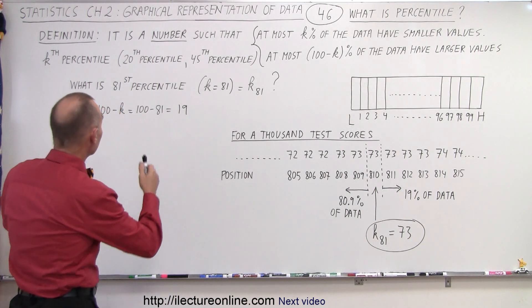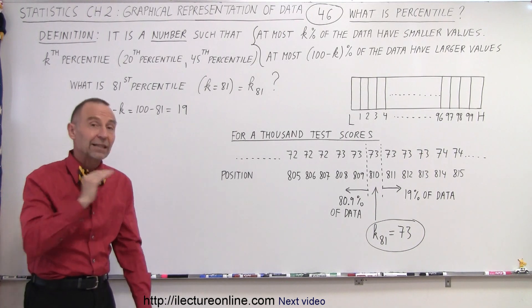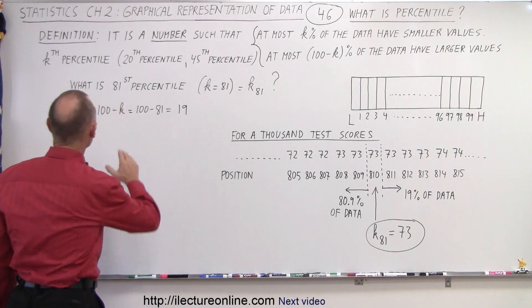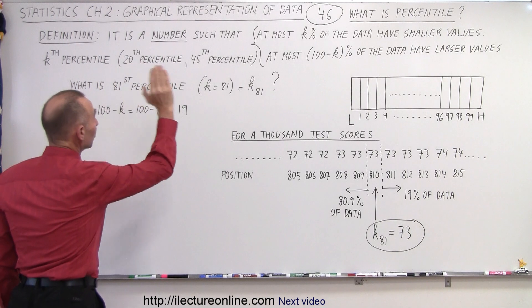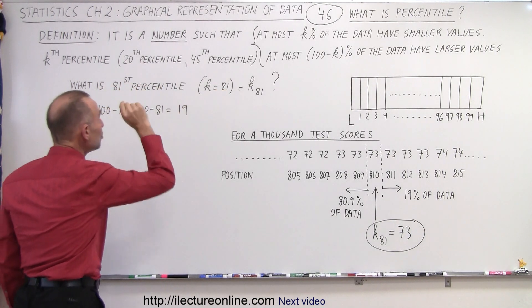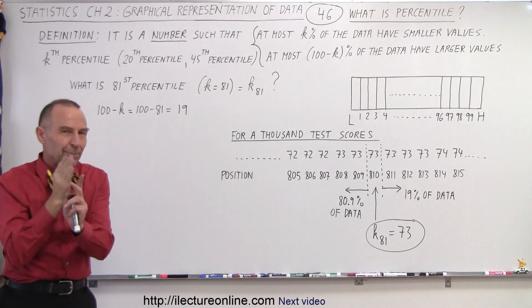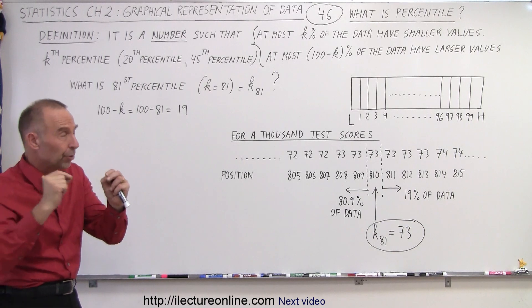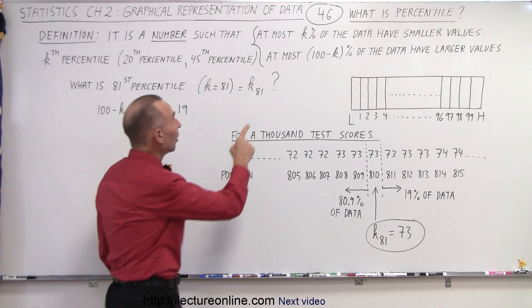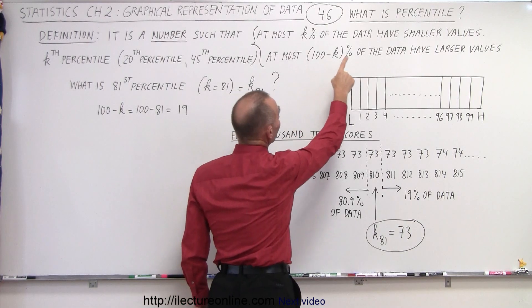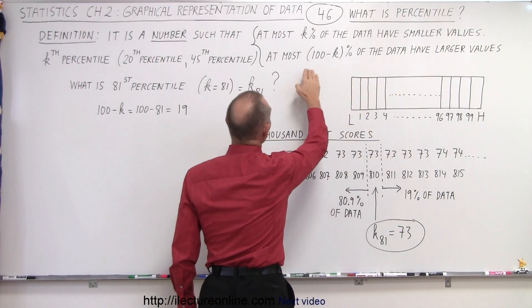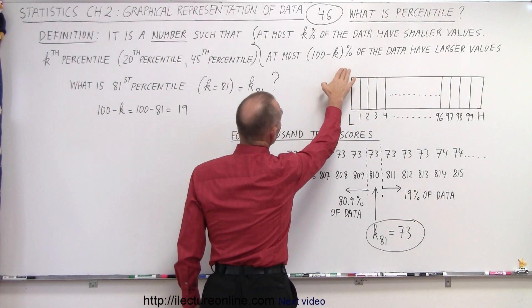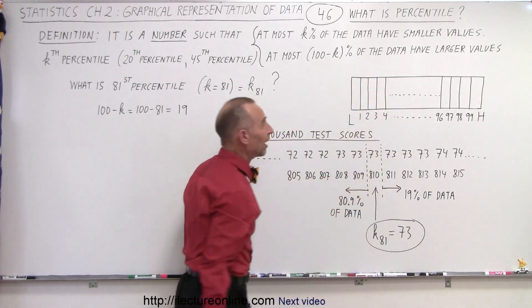So here we have again the definition, which sounds very much like the definition of quartile. The definition of percentile is a number, so it's not actually a position, it's really a number representing that percentile, such that at most k percent of the data have smaller values and at most 100 minus k percent of the data have larger values.